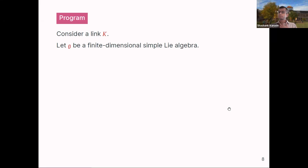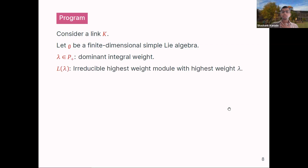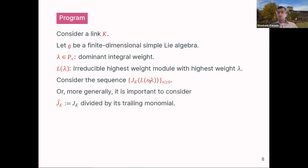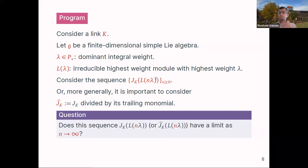So what's the general program? Take your favorite link. Let G be a finite-dimensional simple Lie algebra, let lambda be a dominant integral weight, and consider the corresponding irreducible highest-weight module. Consider the sequence of invariants where you fix the knot and lambda but take multiples n*lambda. It is also important to consider the shifted invariants J-hat, obtained by dividing the invariant by its trailing monomial so that it starts as 1-plus. The question is: does this sequence of invariants have a limit as n goes to infinity? If it does, what is it, and can you relate it to something known?